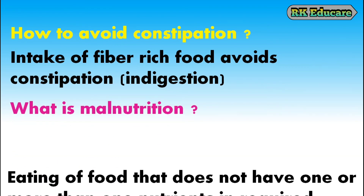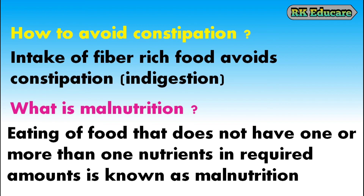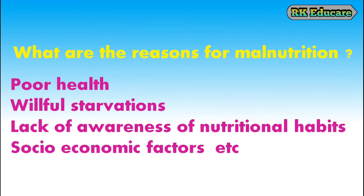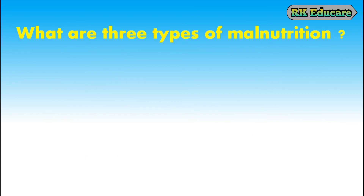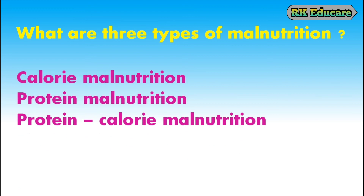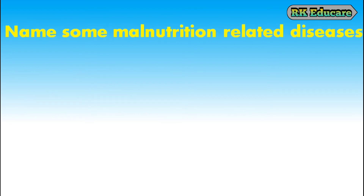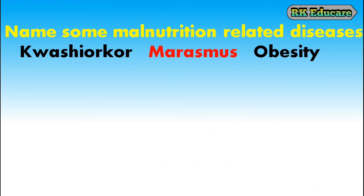What is malnutrition? Eating food that does not have one or more nutrients in required amounts is known as malnutrition. Reasons for malnutrition include poor health, willful starvation, lack of awareness of nutritional habits, and socio-economic factors. What are the three types of malnutrition? Calorie malnutrition, protein malnutrition and protein-calorie malnutrition. Names of malnutrition-related diseases: Kwashiorkor, Marasmus and Obesity.